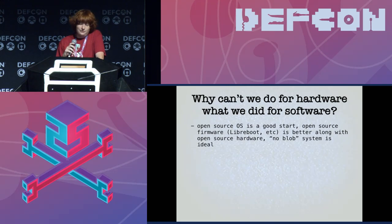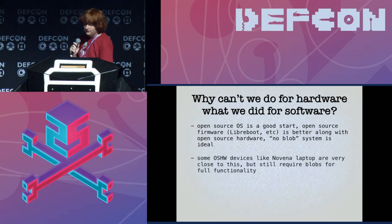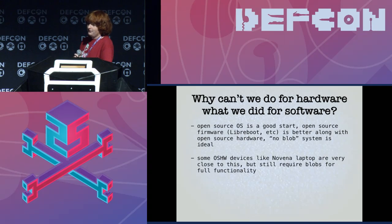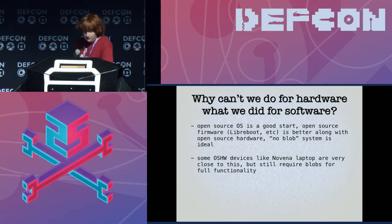When you start looking up open source hardware, you're going to see Libreboot. You're going to see stuff like the Novena hacker laptop, which are very cool. But a lot of these systems still require blobs — pre-compiled pieces of code that you can't inspect. They're basically closed source software that runs on the system. And of course all these platforms still require you to use closed source silicon.